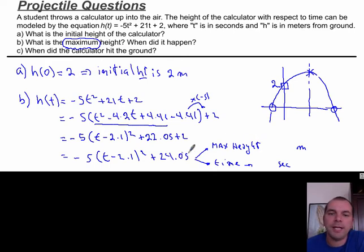So, what is the maximum height? Well, that's my optimal value, the 24.05. And what is the time when this happened? Well, that's the 2.1 over here. So, this is 2.1 and 24.05. That's a pretty good throw in the air, 24 meters. It's a poor calculator, I don't think it survived. And there's my answer.